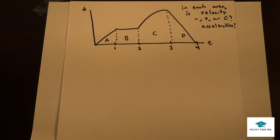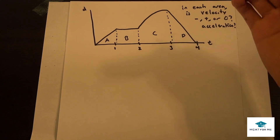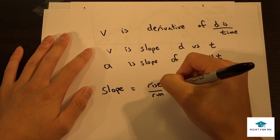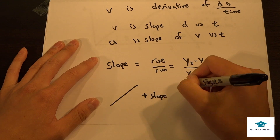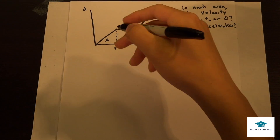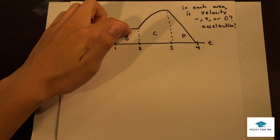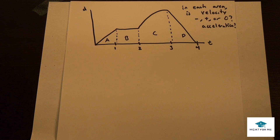Looking at the graph: slope equals rise over run, y2 minus y1 over x2 minus x1. A line going up has a positive slope, going down is negative, and flat is zero. For segment A, the slope is positive. Segment B has a zero slope. Segment C is a bit tricky — it's still going in the positive direction, so it's still positive. Segment D would be negative. Those are the velocity values for each segment.